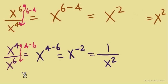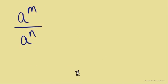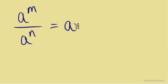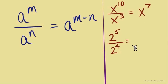When we have a fraction with the same base in numerator and denominator, there is some canceling, and the subtraction comes from what's left over. The rule states: a^m over a^n equals a^(m-n), subtracting top to bottom. For example, x to the tenth over x to the third gives us x to the seventh. And 2 to the fifth over 2 to the fourth gives 2 to the first, or just 2.